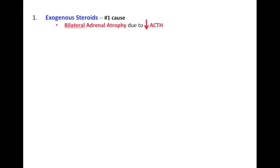There are different ways for Cushing syndrome to develop. The number one cause is exogenous steroids. If someone is taking a lot of steroids — which are essentially the same as cortisol — they will negatively feedback the hypothalamus and eventually the pituitary, causing decreased secretion of ACTH. With no ACTH available, the adrenal glands are not stimulated, so they become atrophied — bilaterally.